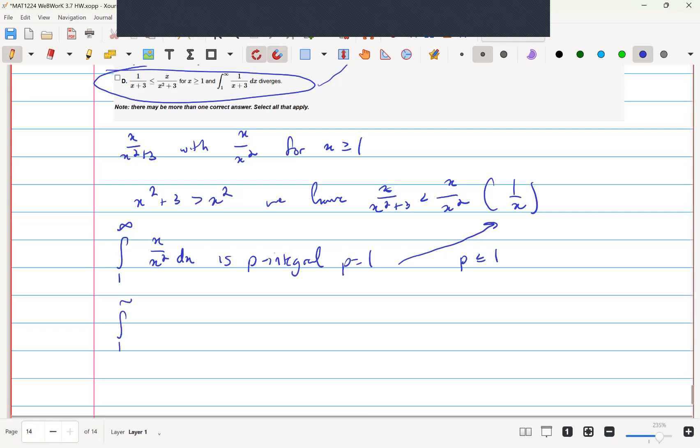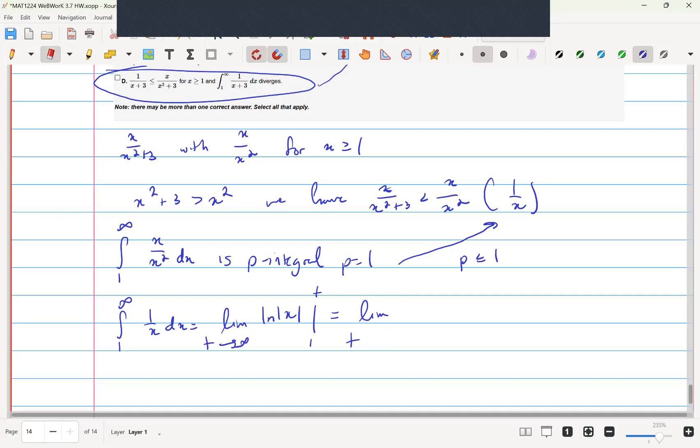We can calculate the integral from 1 to infinity of 1 over x dx, which equals the limit as t goes to infinity of ln t minus ln 1, which is 0, so just ln t, which equals infinity.